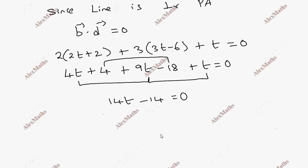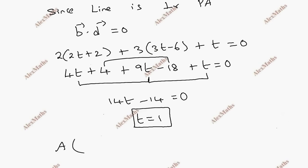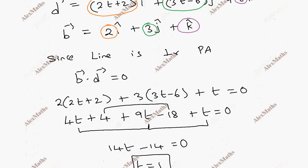Adding the t terms: 14t minus 14 equals zero, so t equals 1. Substituting t equals 1 into the general point A: point A equals (2 times 1 plus 1, 3 times 1 minus 4, 1 plus 3), which gives the actual coordinates of point A.